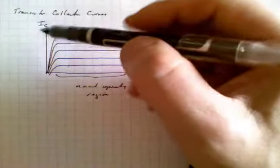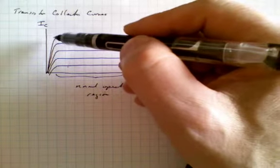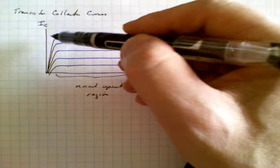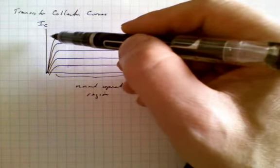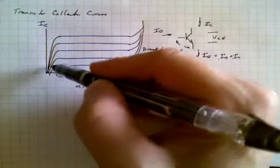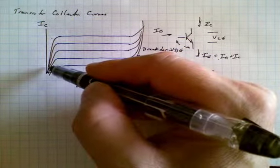So this area over here is where the transistor is passing as much current as it possibly can under the circumstances, and it cannot conduct any more current. So this base current over here, this is as much as it can provide. It can't do any more than that.